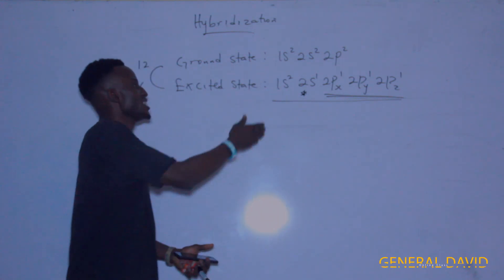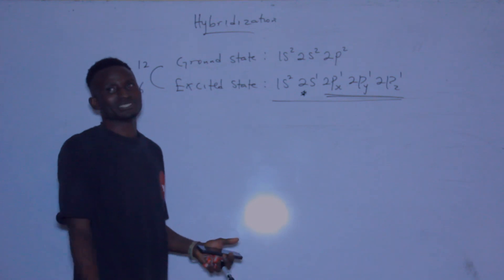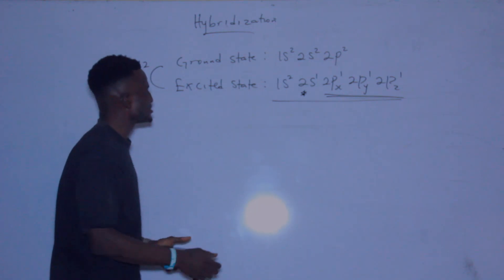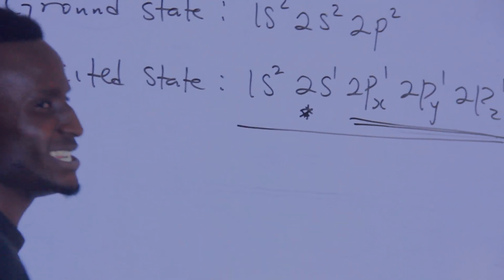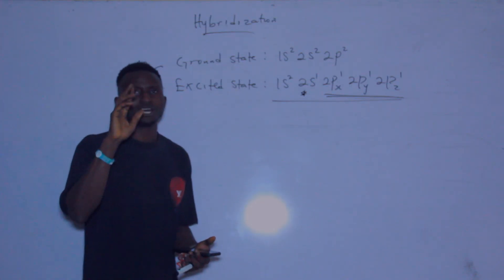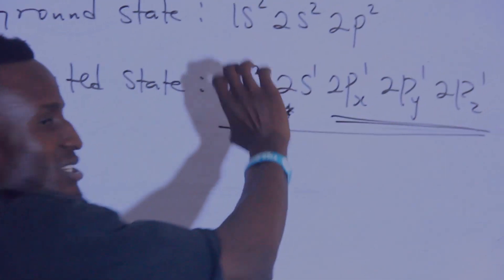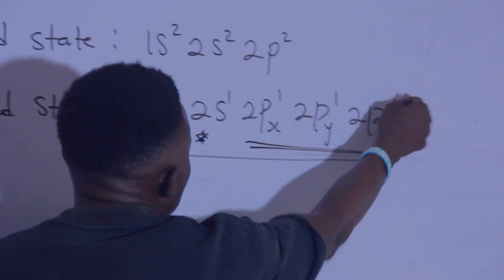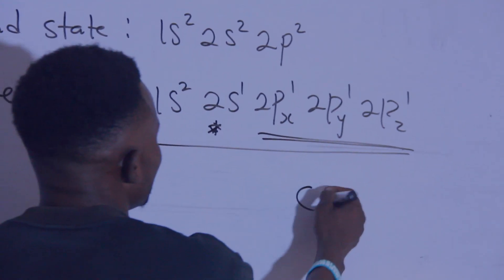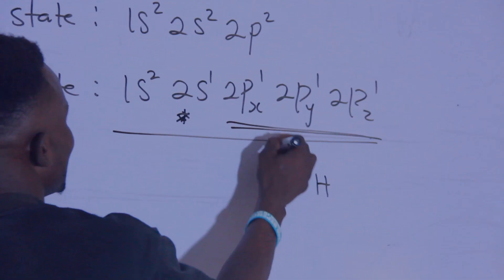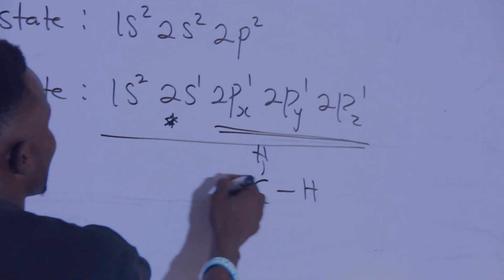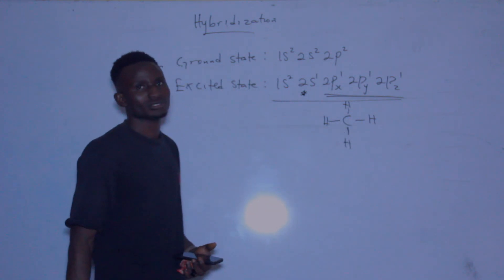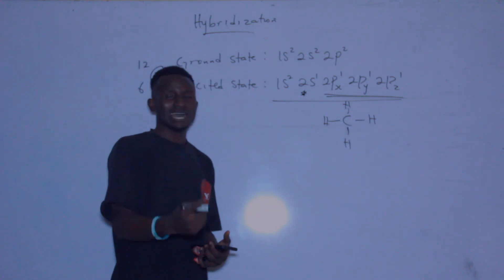Someone will ask: why is the 1s not participating in the mixing and blending? The reason is because it is already filled. The 1s orbital contains 2 electrons and it is already occupied. The 2s and the three 2p orbitals each need one electron, and that is why carbon is tetrahedrally bonded.